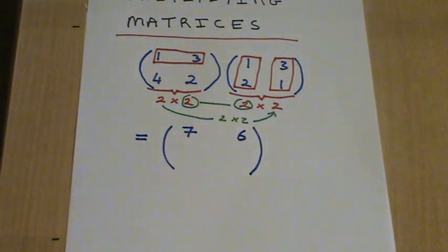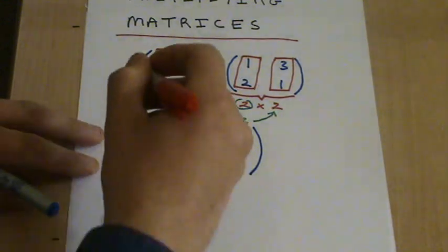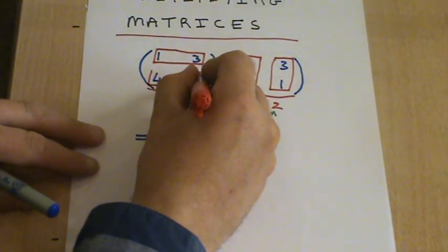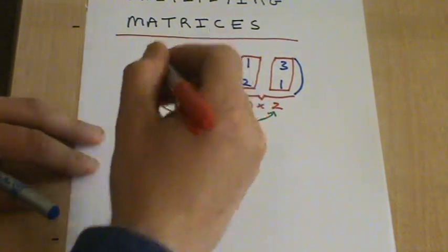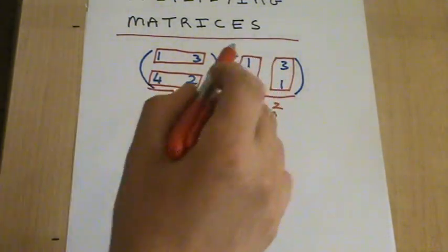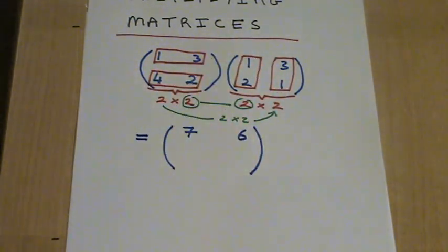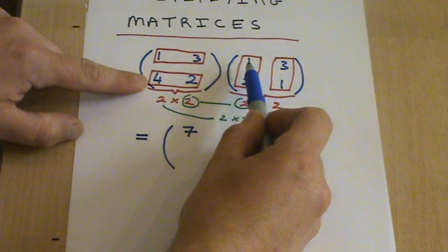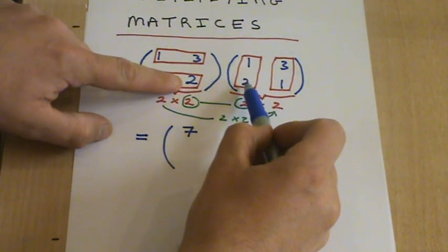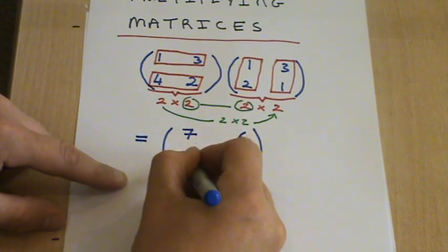To get the 2 entries on the bottom, we're going to use the bottom row. We're going to multiply first of all this row by the first column. So we multiply the 4 by the 1, which is 4, plus the 2 by the 2, which is another 4, and that gives you 8 altogether.